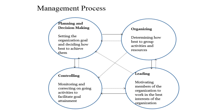This is the management process. It starts with planning and decision making, then organizing, leading, and controlling. Planning and decision making involves setting organizational goals and deciding how best to achieve them. Organizing involves determining how best to group activities and resources together. Leading involves motivating members of the organization to work in the best interests of the organization, while controlling involves monitoring and correcting ongoing activities to facilitate goal attainment.